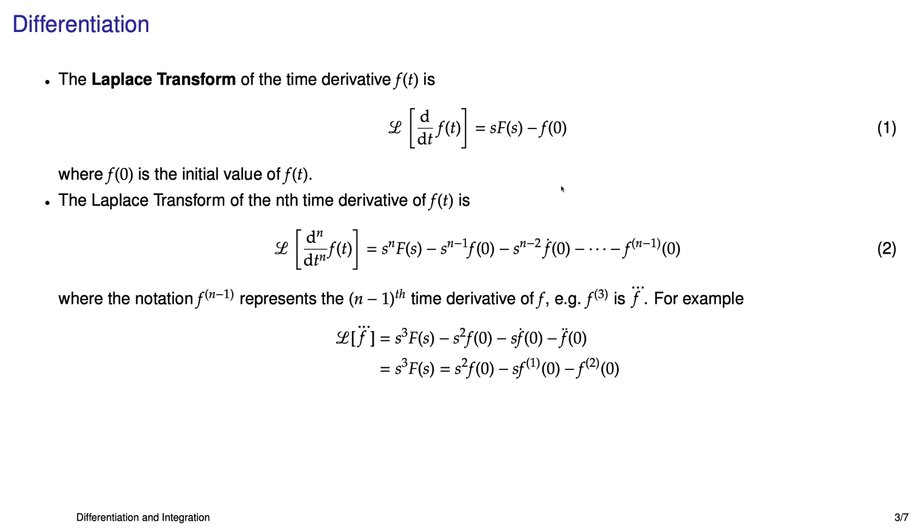Now, this gets a little bit more exotic when you have higher-order derivatives. So, for instance, if you have the second derivative of f or the third derivative of f or, as shown in equation 2, the nth derivative of f. But it's not too bad. You just get s to the n, however many derivatives you have, times F(s). And then you have to subtract off this long list of all the initial conditions. Now, before we dive into equation 2 more deeply, it's probably a good idea to look at this notation.